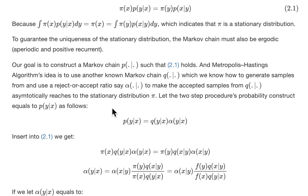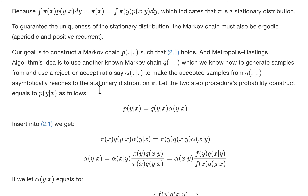The Metropolis-Hastings algorithm idea addresses how to construct this Markov chain P, since there's no easy way to come up with P directly. The idea is: suppose we have another Markov chain Q that we can easily generate samples from. We use Q to propose a new sample, and then we use another probability alpha to either accept or reject this new proposal. We do that repeatedly — that's the core idea of the Metropolis-Hastings algorithm.